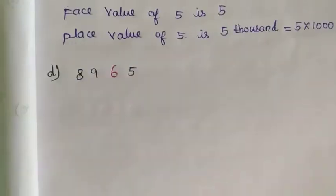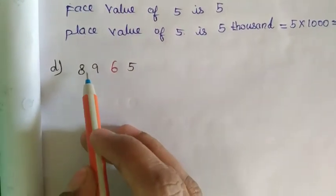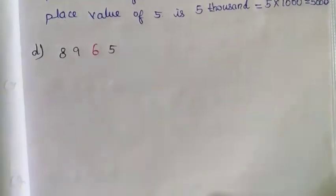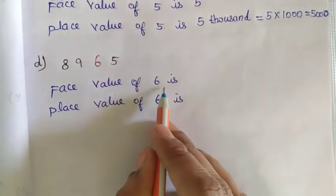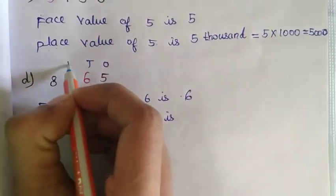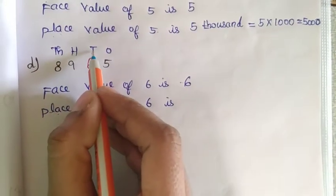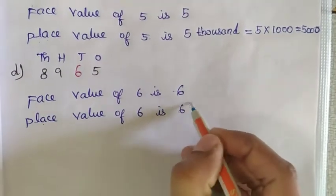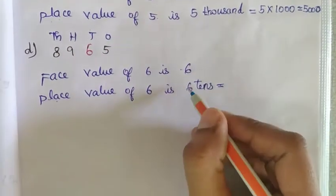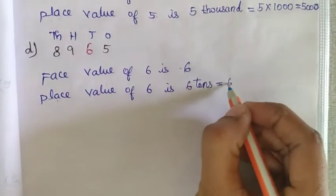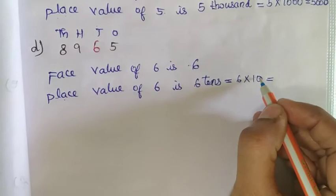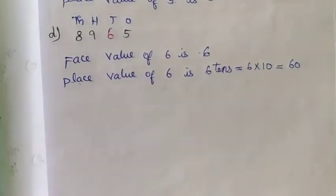D question: the colored number is 6. Face value of 6 is 6 itself. Place value of 6: 1's, 10's, 100, 1000. 6 is sitting in 10's place. So write 6 tens equals 6 multiplied by 10 equals 60. Understood?